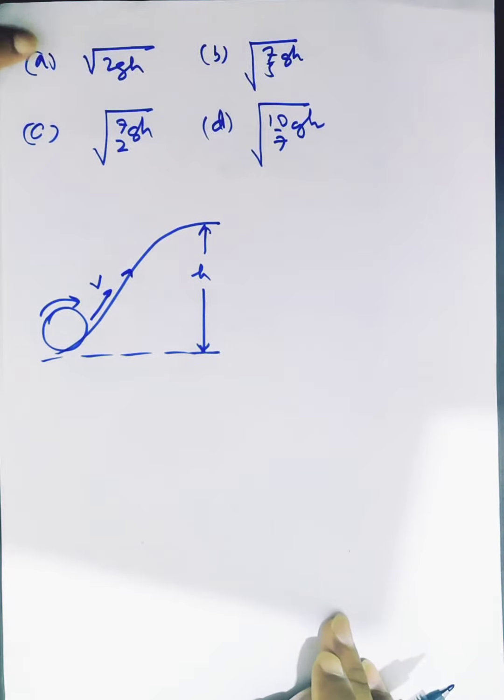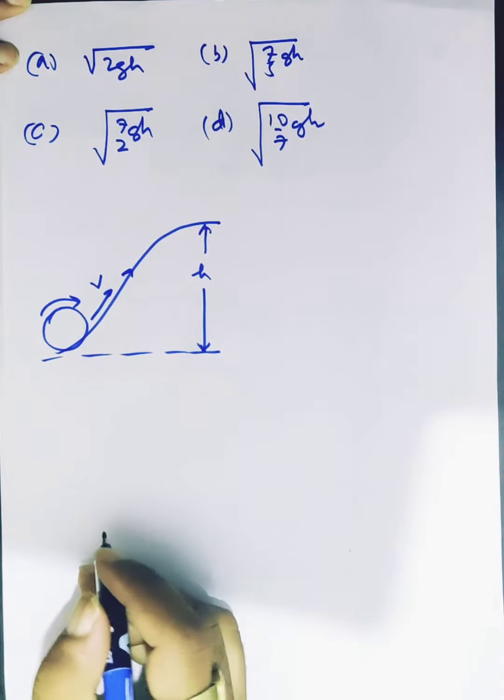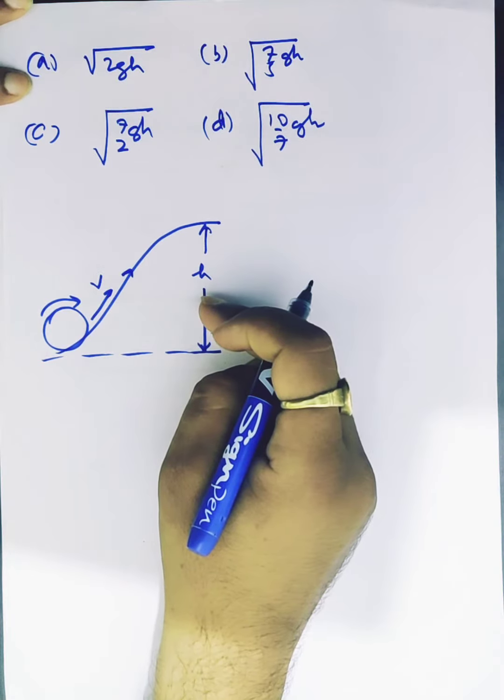Here are the options in the diagram. What is the minimum velocity v if it is to go up here? It must be converted to potential energy.